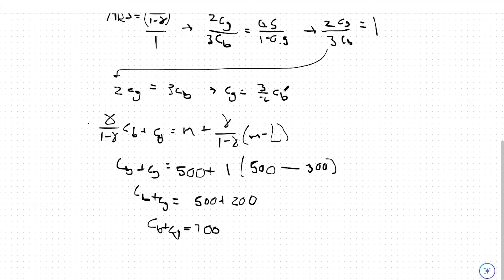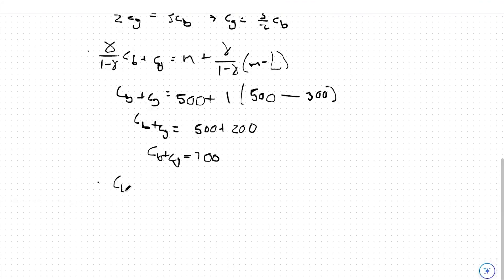From there, I can plug in 3 halves CB for CG, and I can say CB plus 3 halves CB equals 700. So 5 halves CB equals 700, which means CB is equal to 1,400 divided by 5, which is going to be 280.